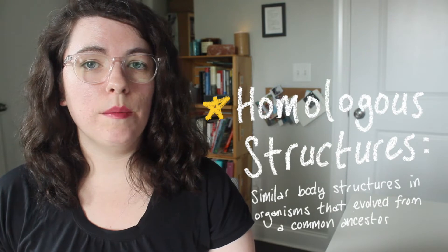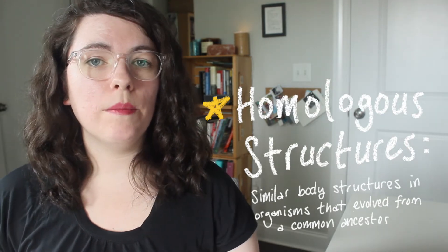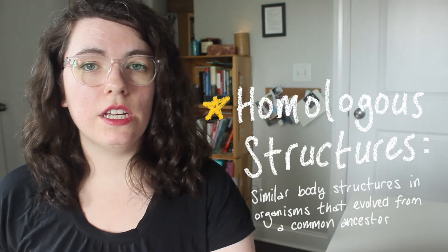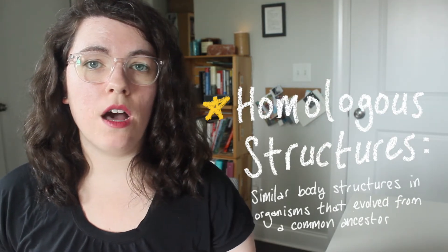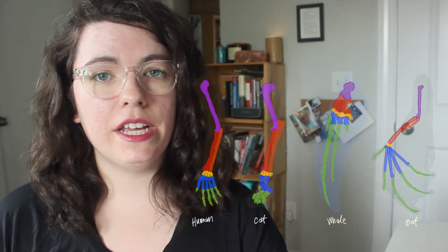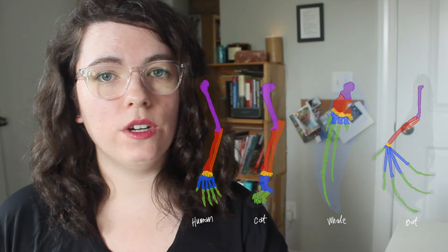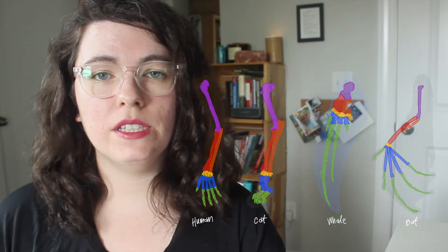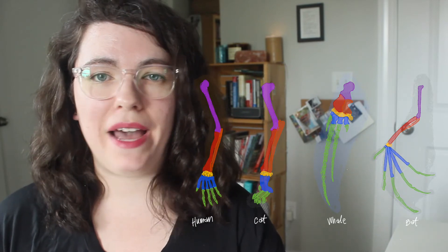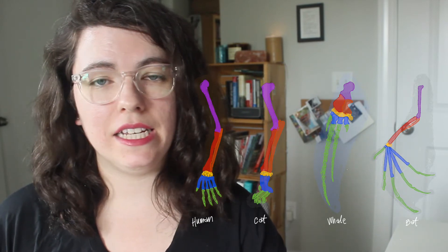Over a longer period of time, these differences in physical traits can diverge into different species. One result of this process is called homologous structures, or similar body structures in organisms that evolved from a common ancestor. One example of homologous structures is the similarity in the bone structures of the four limbs of animals as different as whales, bats, cats, and even humans.